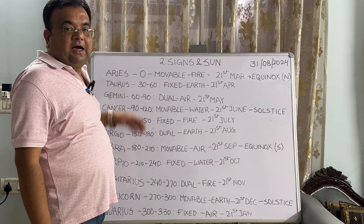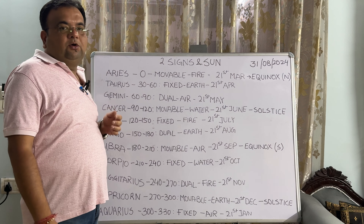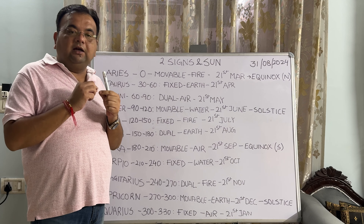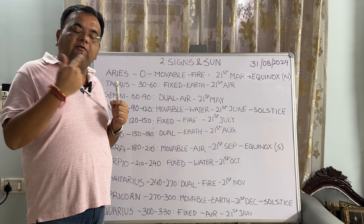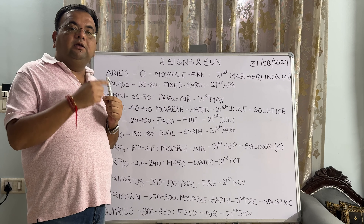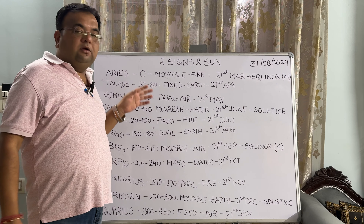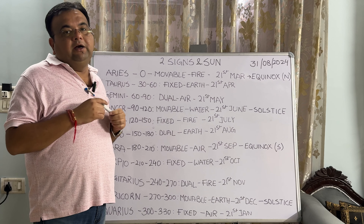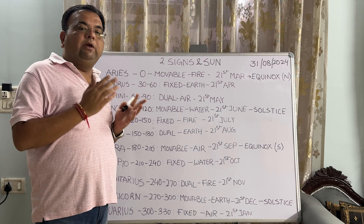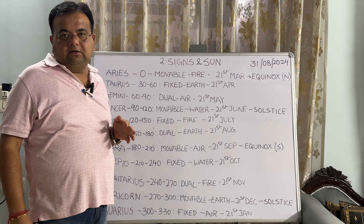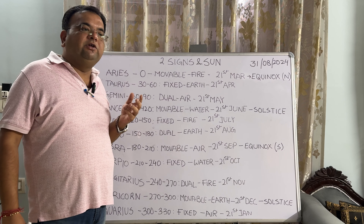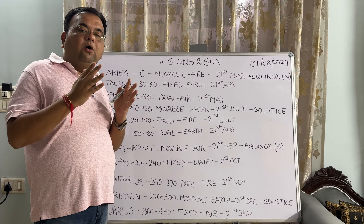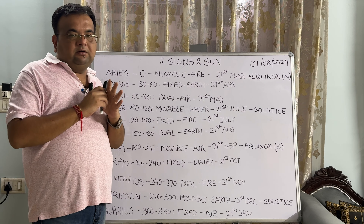Today we are going to discuss about the signs and the sun. As everybody knows, the sun is the center and all the planets revolve around the sun in a 360-degree fashion. The zodiac has been divided into 12 equal parts by our ancient sages. They used to observe a certain set of stars and based on those stars they have given the names.